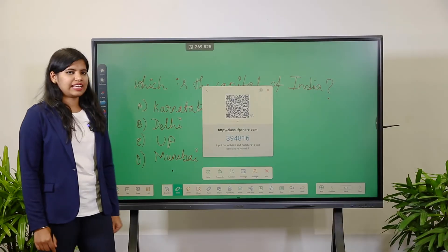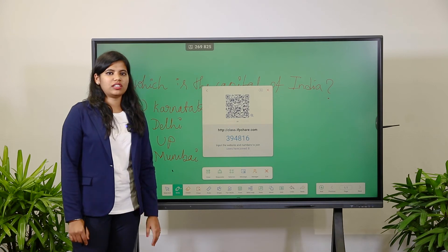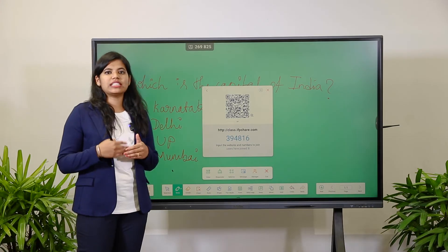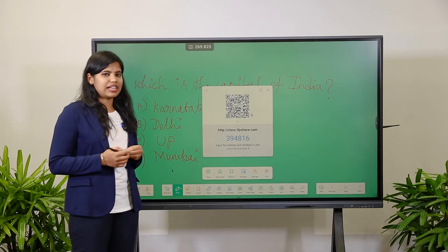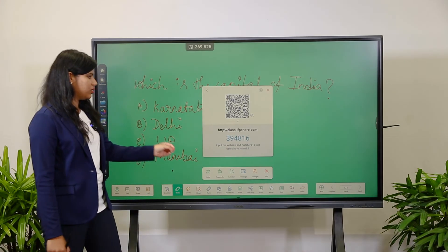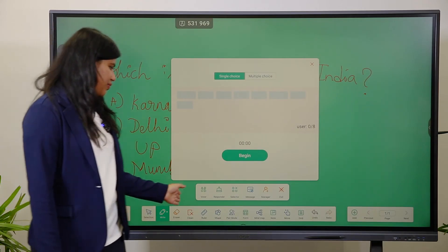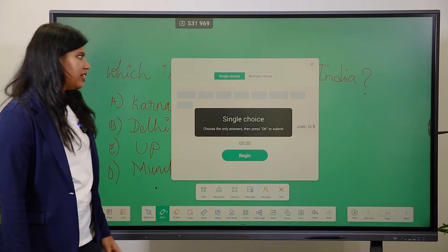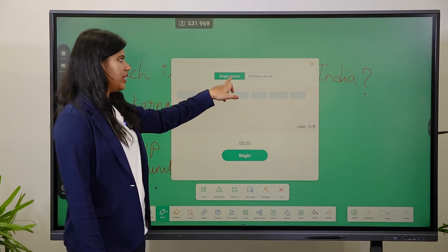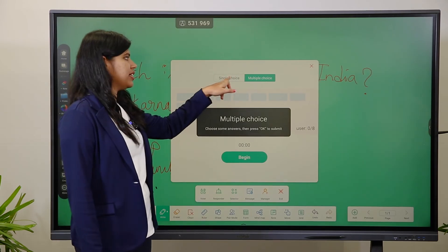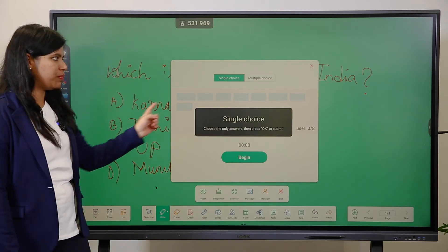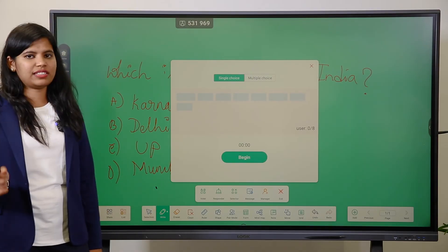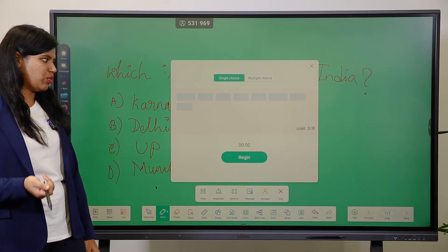Next is Air Class, an important feature for classroom applications. When teachers want to conduct a test, they can use Air Class. In this, we have an Outer option with two choices: Single Choice and Multiple Choice. In Single Choice, the teacher displays a question with multiple options but students can answer only one.